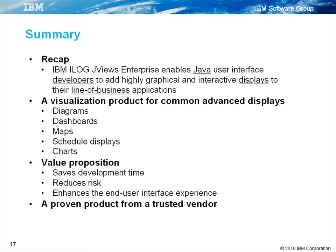Let's recap what we've covered. IBM iLog JV's Enterprise enables Java user interface developers to add highly graphical and interactive displays to their line of business applications. The ideal application for JV's Enterprise is with a software development team working in Java, building a software application with highly graphical user interface needs, for a demanding business application.